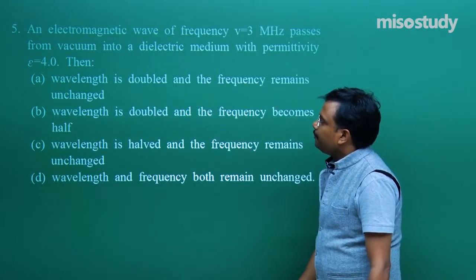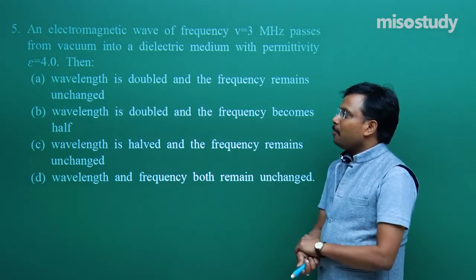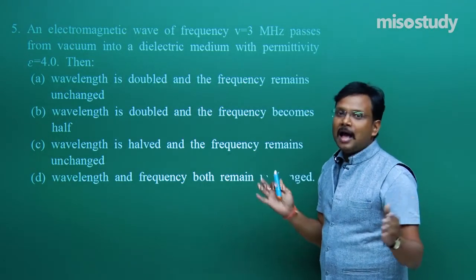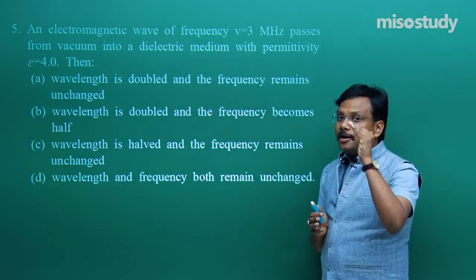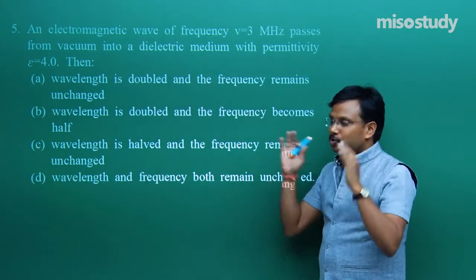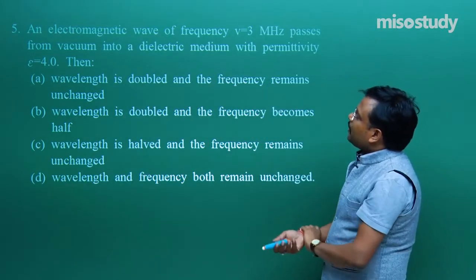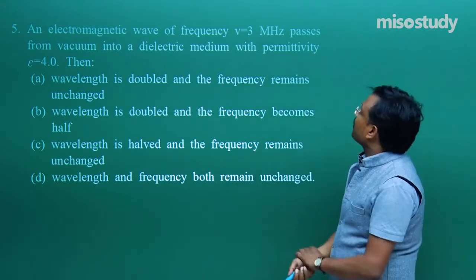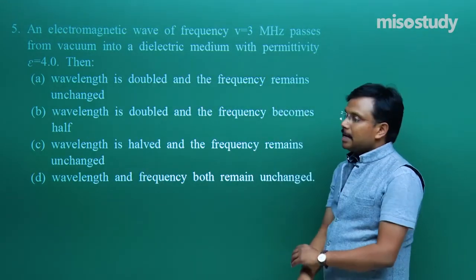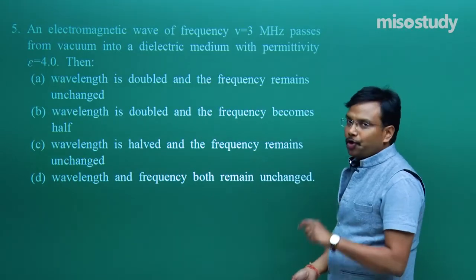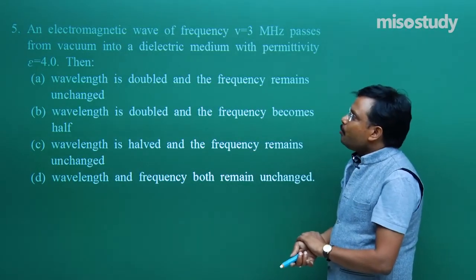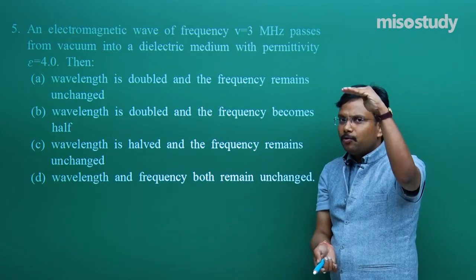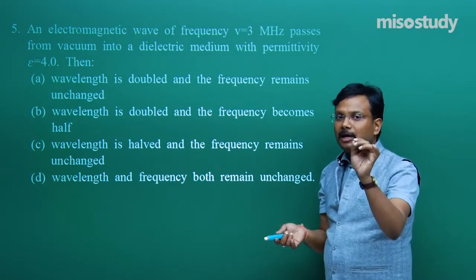Let us come to problem number 5. Without any calculation, I will show you how to eliminate wrong options and zero in on the right one. An electromagnetic wave of frequency ν = 3×10⁶ Hz (3 MHz) passes from vacuum into a dielectric medium. The moment an EM wave passes from vacuum into any dielectric medium, its velocity is bound to reduce — that is the simple fact.